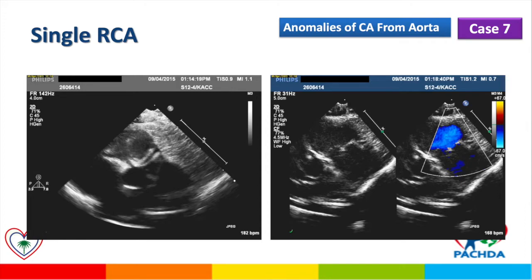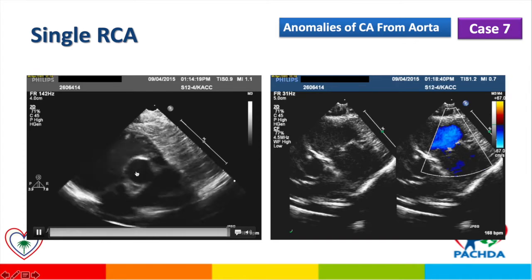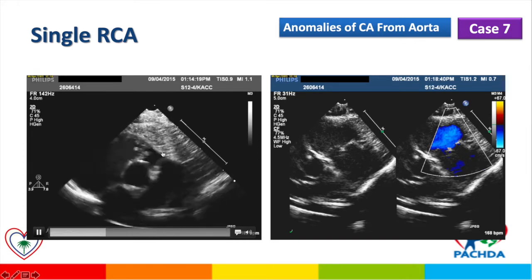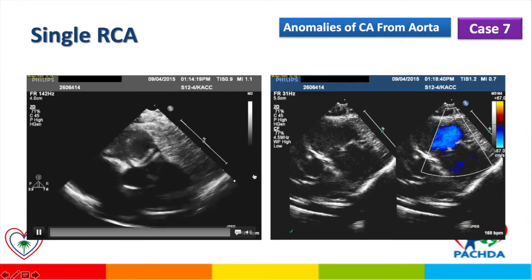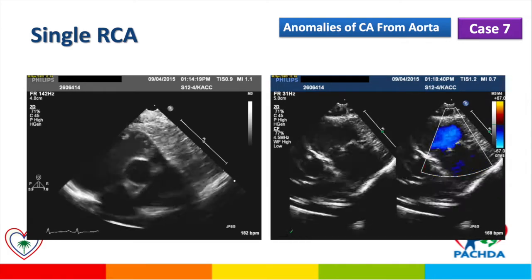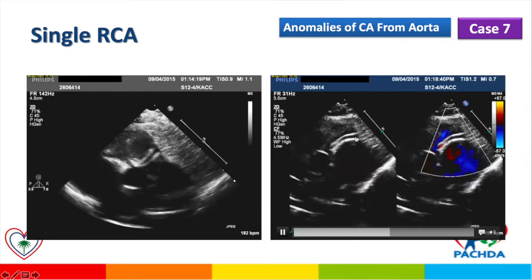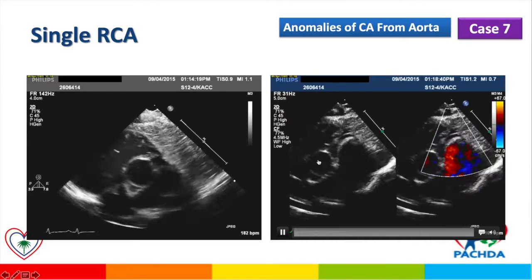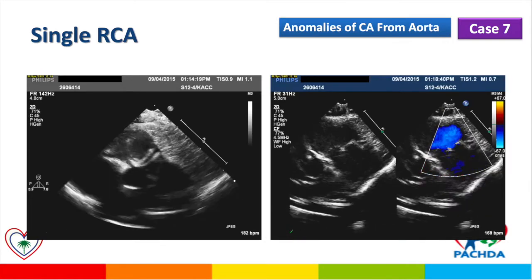An example of a single right coronary artery: this is the right coronary artery, and the left coronary artery is coming out of the right side. With further imaging, you can see that the left main coronary artery is coming out of the right side. So this patient has a single right coronary artery.